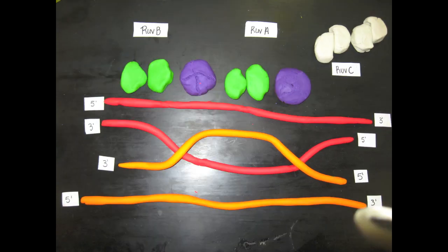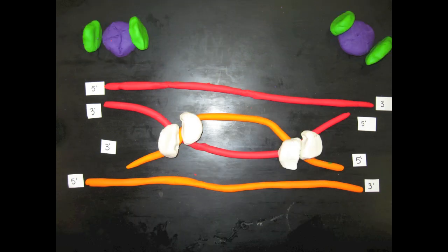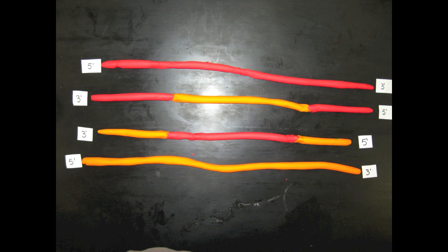RuvA, RuvB, and RuvC then join. RuvA and RuvB strictly move the Holliday junction while RuvC cleaves. The result of this cleaving is our final recombined DNA, which is then ligated.